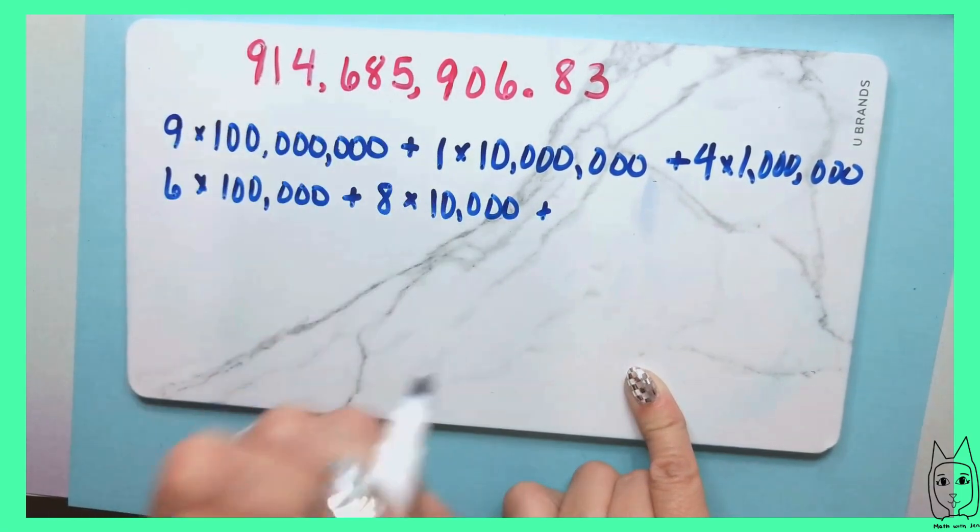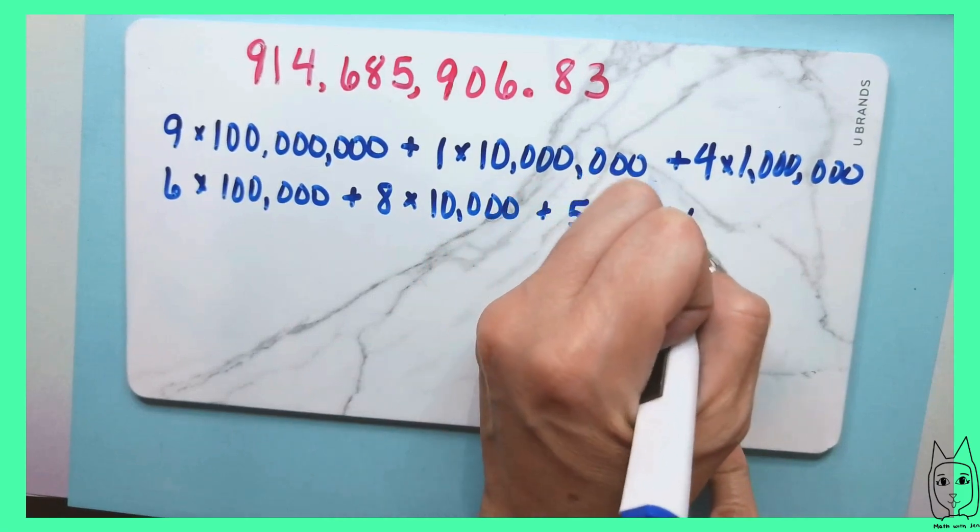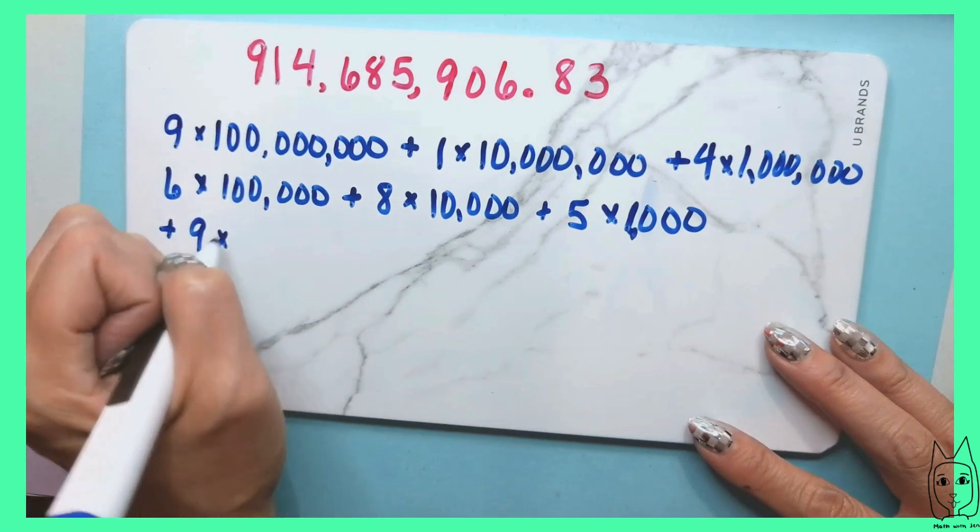Then I have the five in the thousands, so 5 times 1,000. And then we have nine in the hundreds, so plus 9 times 100.